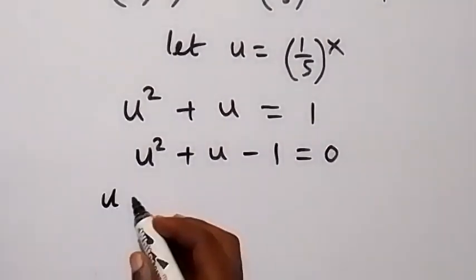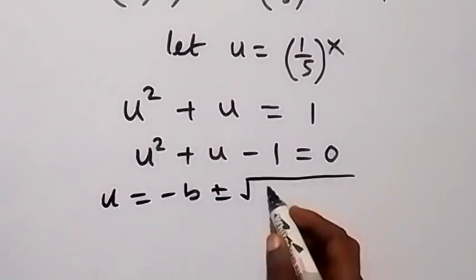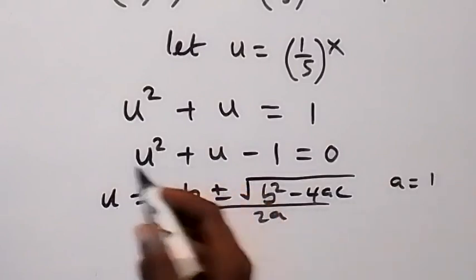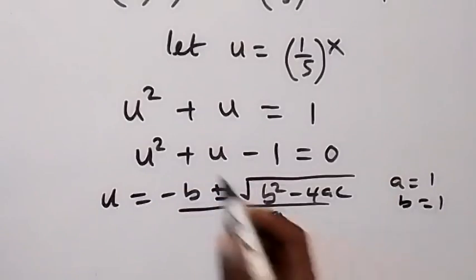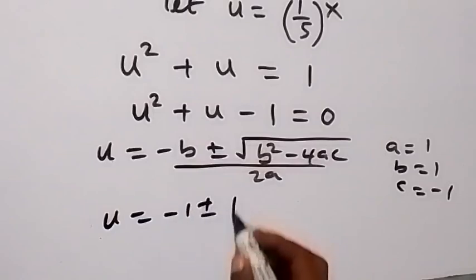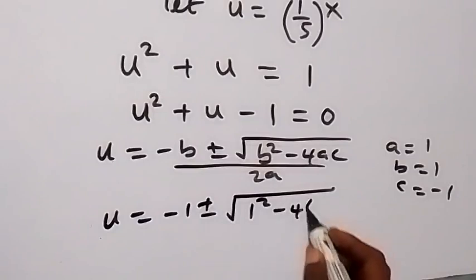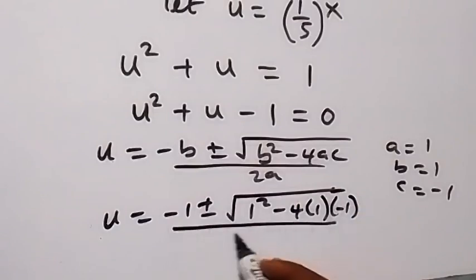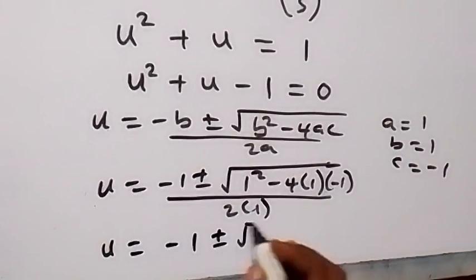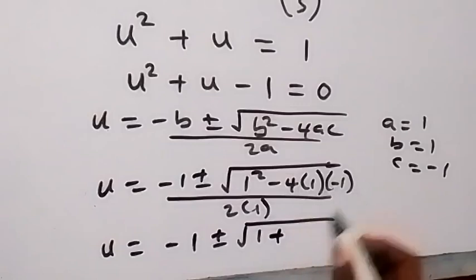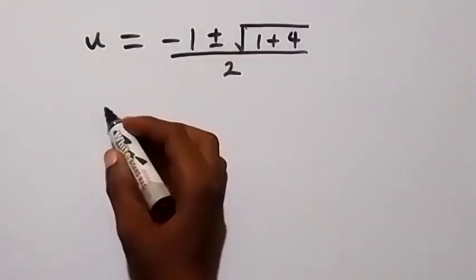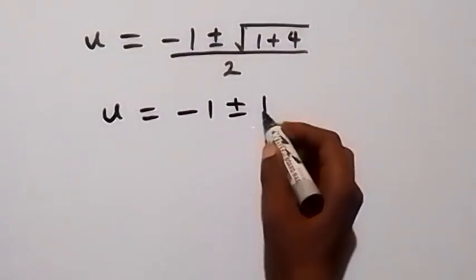If we solve this using the quadratic formula, u equals minus b plus or minus square root of b squared minus 4ac, all over 2a. Here a = 1, b = 1, c = −1, so u equals minus 1 plus or minus square root of 1 squared minus 4 times 1 times minus 1, all over 2 times 1. That gives us u equals minus 1 plus or minus root 5, over 2.